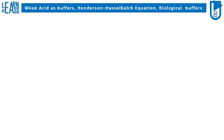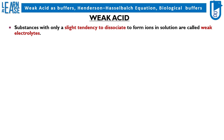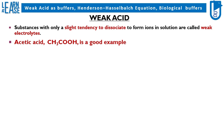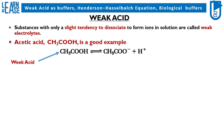I will introduce you to weak acids and conjugate bases. Substances with only a slight tendency to dissociate to form ions in solution are called weak electrolytes. Acetic acid, CH3COOH, is a good example. The reaction for dissociation of CH3COOH in water is shown, which is a weak acid.